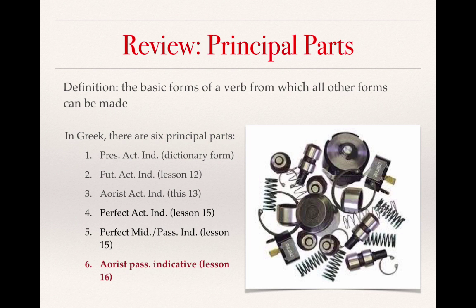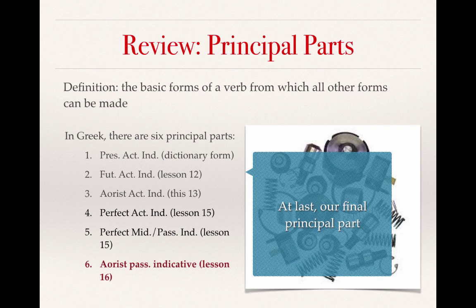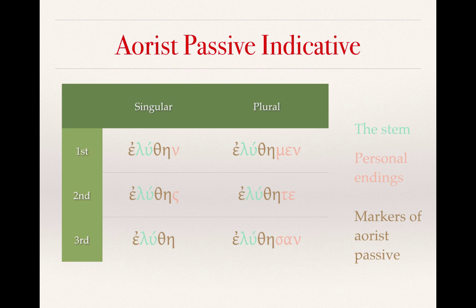Here you will see the aorist passive indicative forms. As I have done in past lectures, I've tried to color code it to point out those markers of the aorist passive. Just to remind ourselves what the passive voice is: it is when the subject of a sentence has an action performed to it or on it, rather than performing the action itself. So, eleuthane we would translate as 'I was loosened.'